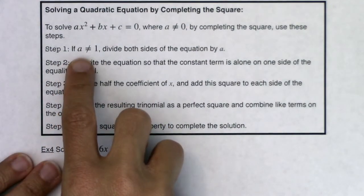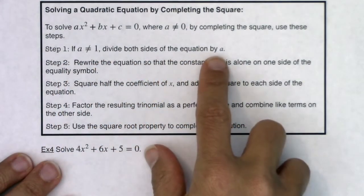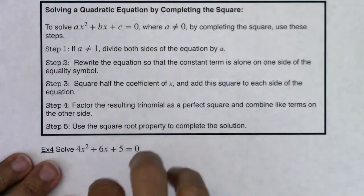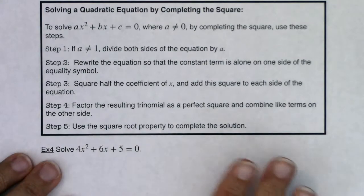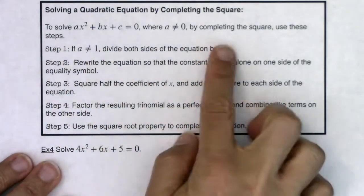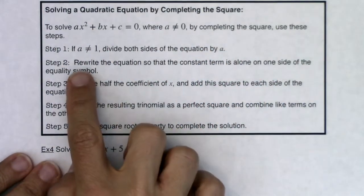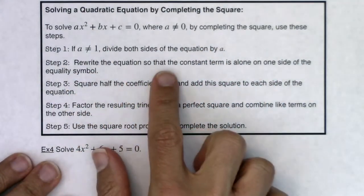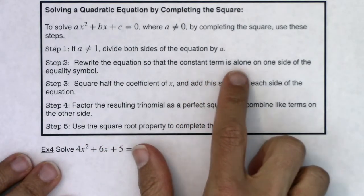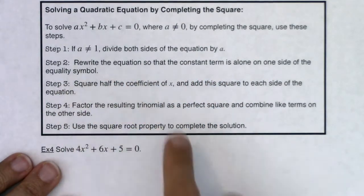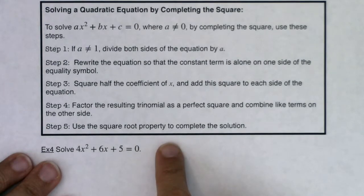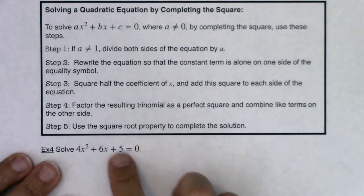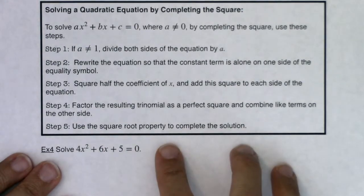If a isn't equal to 1 you have to divide both sides of the equation by a. That's what we're going to have to do initially for example 4, whereas in example 3 a was 1 so I could just skip step 1. We're going to rewrite the equation so that the constant term is alone on one side of the equality symbol, so I'm going to wind up moving the 5 — or really 5 fourths once we divide — to the other side.